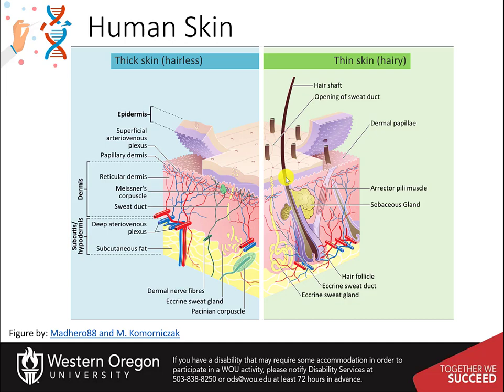In humans, the sebaceous gland occurs in the greatest number on the face and scalp, but also on all parts of the skin except the palms of the hand and the soles of the feet. In the eyelids, meibomian glands, also called tarsal glands, are a type of sebaceous gland that secrete a special type of sebum into tears.